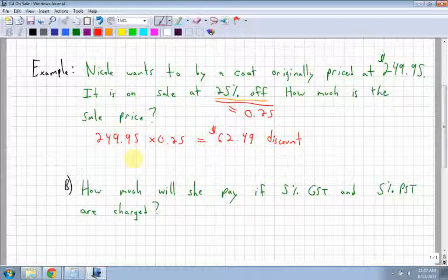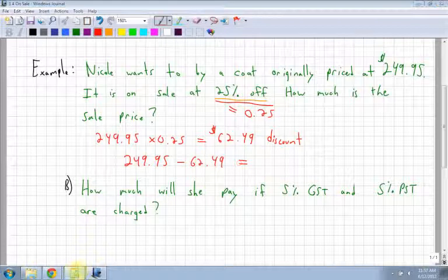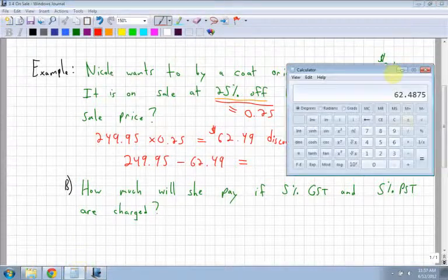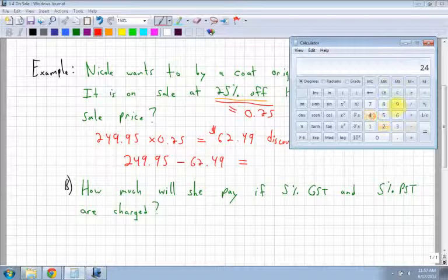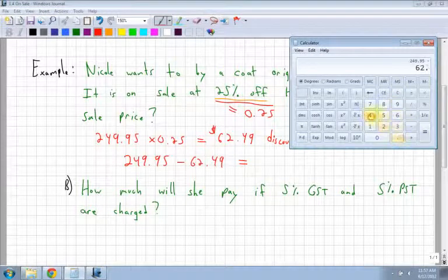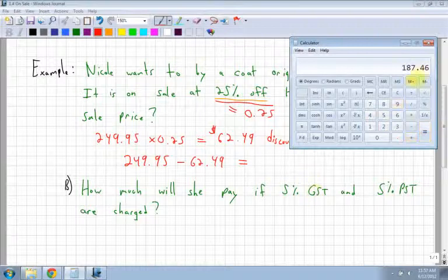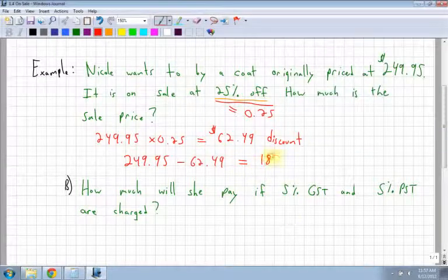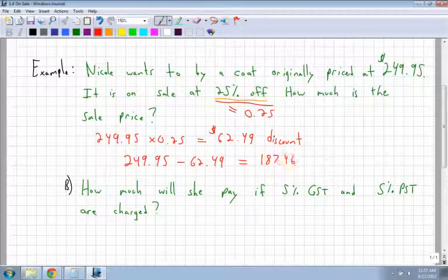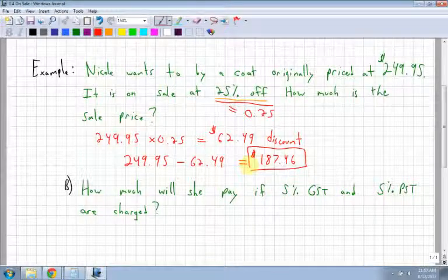So what happens is you take your $249.95 and you subtract off the $62.49. So you end up getting $249.95 minus $62.49. You get $187.46. So this is how much money she is going to pay for her sale.